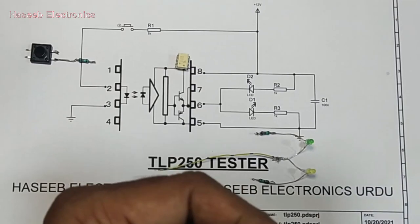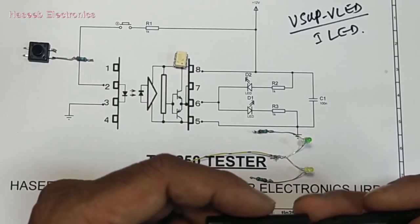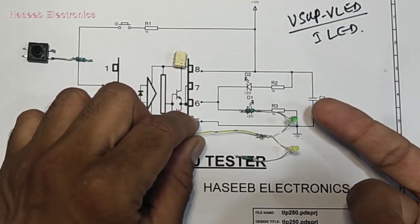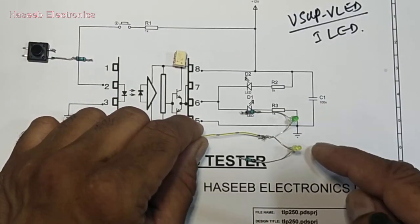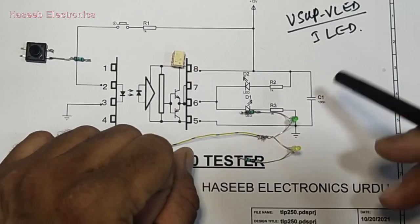Same formula: V supply minus V LED divided by I LED. If using 5mm LED you can use 30mA or 25mA. I am using 3mm LED which will consume 10mA to give medium light.